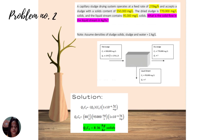Problem number two: what is the solid flow in the liquid stream in kg per hour? The solution is Q3 times C3 times the conversion factor 1×10⁻⁶ kg per mg. Calculating: 88 liters per hour times 95,000 mg per liter times 1×10⁻⁶ kg per mg gives an answer of 8.36 kg per hour of solids.